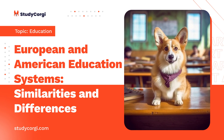In the United States, the best institutions restrict the number of years a student can take in school. Therefore, learners complete faster in the United States than in Europe. The United States also has a student loan policy, where the loan is repayable after one finds employment.